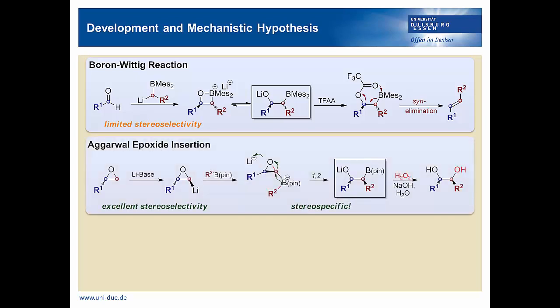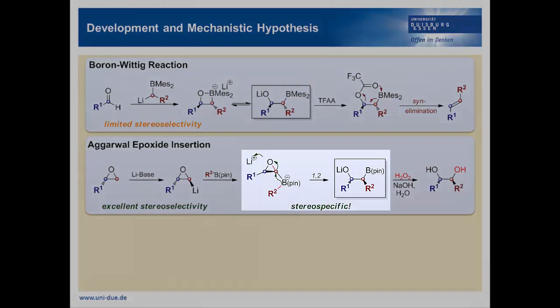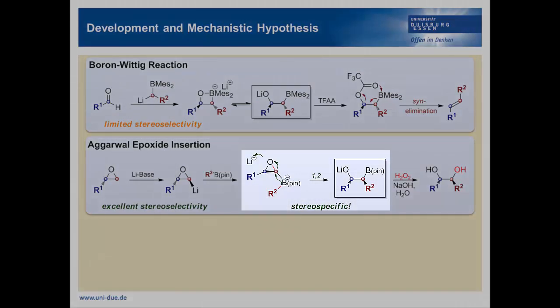In 2009, Aggarwal and co-workers described the insertion of lithiated epoxides into boronic esters in order to make 1,2-diols. Lithiation of the epoxide delivers the carbenoid, which then reacts to an ate-complex, which undergoes a stereospecific 1,2-rearrangement delivering an intermediate which is very similar to Peltier's beta-alkoxide.